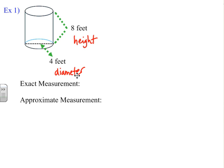What we're going to do is take this information and find the volume of this cylinder. So we're going to write down the formula, volume equals pi r squared h. And because we're going to look for the exact measurement first, we are not going to use 3.14 for pi. We're going to leave it as pi.